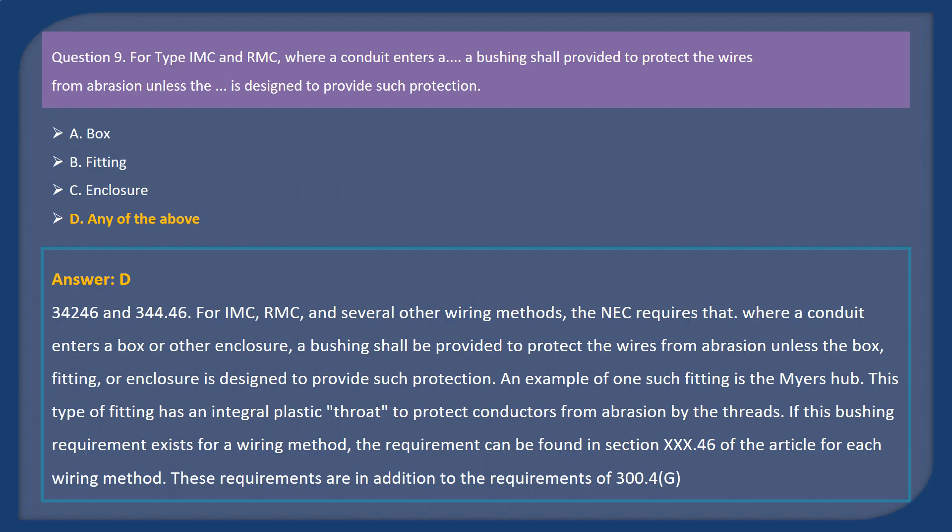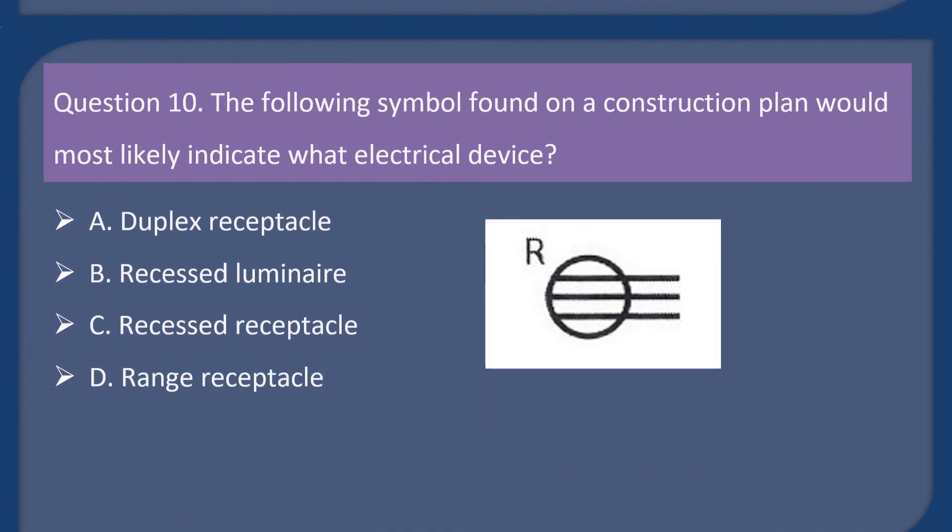Answer: D. Explanation. 342.46 and 344.46. For IMC, RMC, and several other wiring methods, the NEC requires that where a conduit enters a box or other enclosure, a bushing shall be provided to protect the wires from abrasion unless the box, fitting, or enclosure is designed to provide such protection. An example of one such fitting is the Myers Hub. This type of fitting has an integral plastic throat to protect conductors from abrasion by the threads. If this bushing requirement exists for a wiring method, the requirement can be found in section XXX.46 of the article for each wiring method. These requirements are in addition to the requirements of 300.4G.